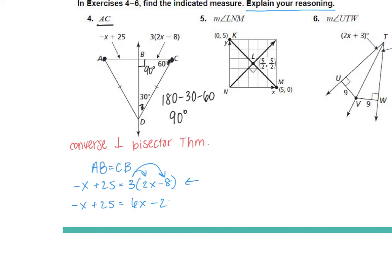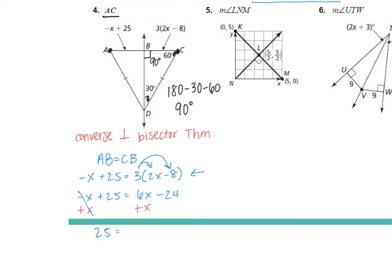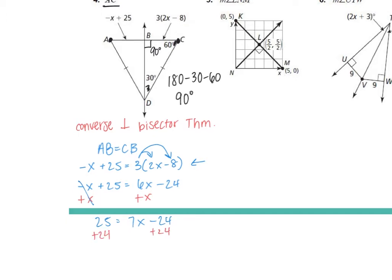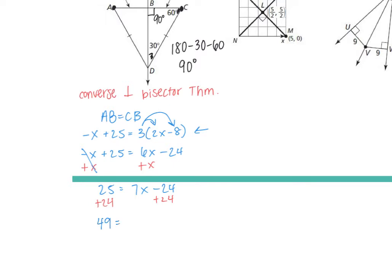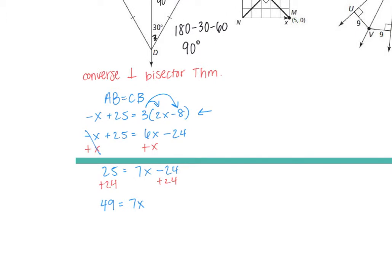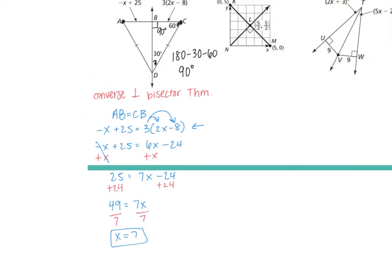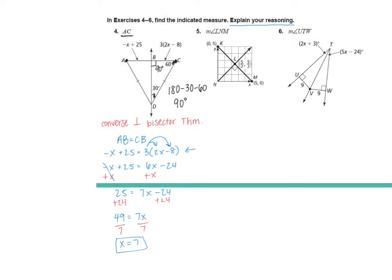What'd you do — add x to both sides or subtract 6x? Let's add x to both sides. These will cancel, so 25 equals 7x minus 24. Add 24 to both sides, we get 49 equals 7x. Divide by 7, and x equals 7. But is that our answer? No. We still have to find AC — we need to plug in x and then what else?